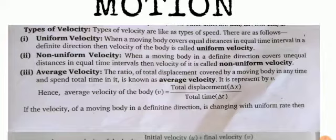Third topic is average velocity. The ratio of the total displacement covered by a moving body in any time and the total time spent in it is known as average velocity. It is represented by V.